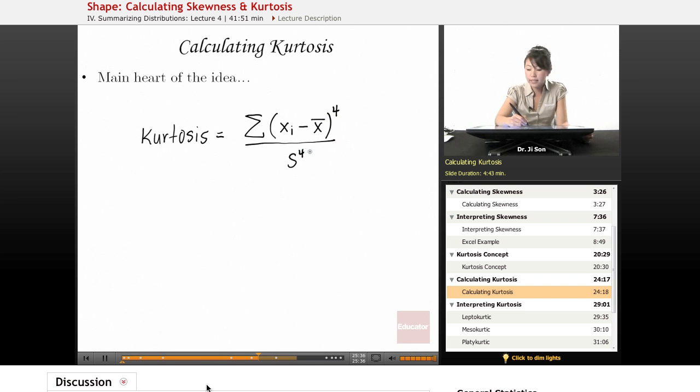Now, once again, this is going to always be positive. Standard deviation is already positive. And then we're going to raise it to the fourth power. So kurtosis is largely going to be a positive number.